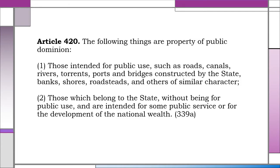Article 420. The following things are property of public dominion: 1. Those intended for public use, such as roads, canals, rivers, torrents, ports and bridges constructed by the state, banks, shores, roadsteads, and others of similar character. And 2. Those which belong to the state without being for public use and are intended for some public service or for the development of the national wealth.